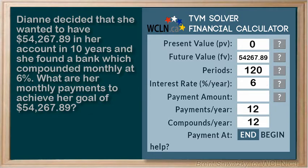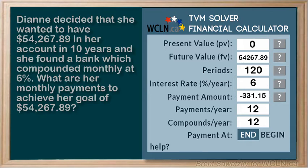So we click on our question mark beside payment amount and it gives us minus $331.15. We expected a negative, because that's money that we're investing into the bank — it's coming out of our pockets. So that makes sense.